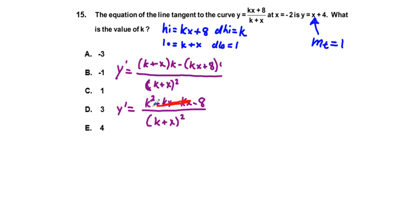And what we can do is set this function at m sub t equals 1. So we can set m sub t at 1 when x is equal to negative 2. So doing that, we have 1 equals k squared minus 8, all over k minus 2, quantity squared. And so, that's what we have, 1 is equal to this.